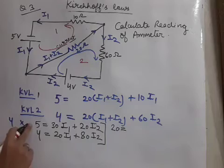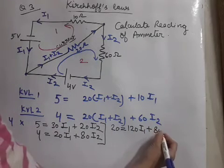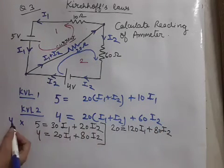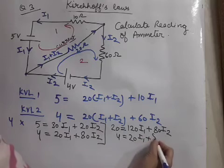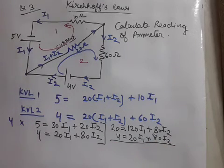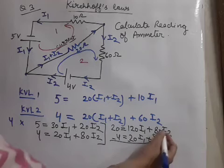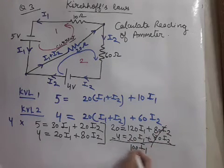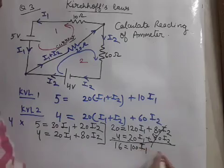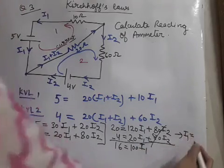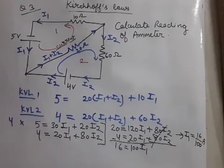So if we multiply it with the 4, 4 times 5 is 20, 4 times 30I₁ is 120I₁, and 4 times 20I₂ is 80I₂. We have multiplied the first equation with 4 and 2nd equation as it is we have to write. After that, the two equations we have to subtract. For that, we change the sign and this is getting cancelled. 120 minus 20 is 100, 20 minus 4 is 16. In this way, I₁ answer we are getting 16 by 100 ampere.